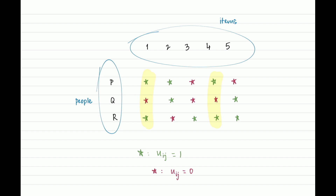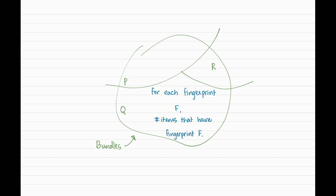When analyzing a bundle, instead of looking individually at every item, you go through every fingerprint and ask how many items of that fingerprint a person received. Once you have those numbers, that is essentially a full description of the bundle — but instead of a long list of items, it is a list as long as the number of fingerprints. This is a succinct way of describing the information about bundles.